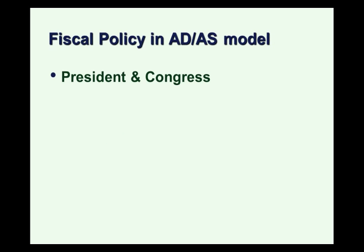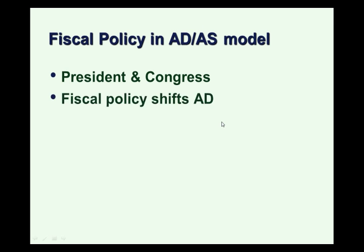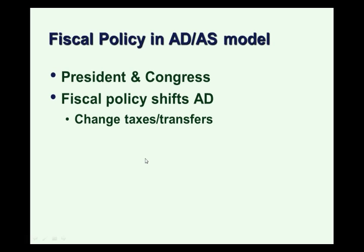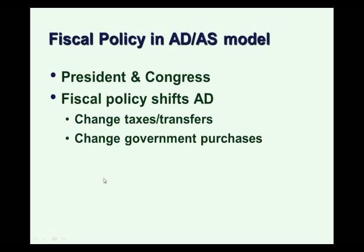Let's start with fiscal policy. As a reminder, fiscal policy originates with the President and Congress in the United States. Fiscal policy has the ability to shift aggregate demand in our model, and that's how we're going to close these gaps. We can shift aggregate demand with fiscal policy by changing taxes or transfer payments, or by changing the amount of government purchases.